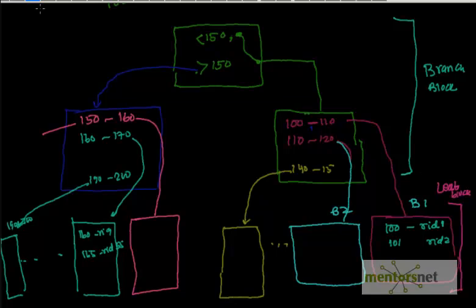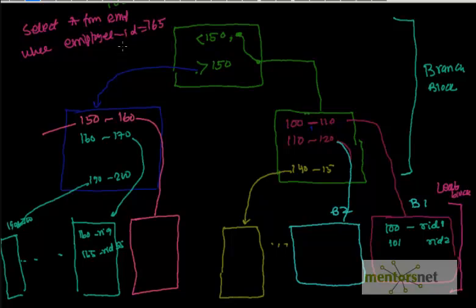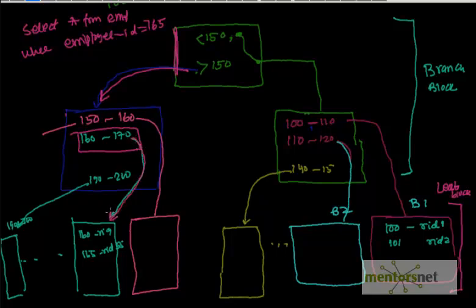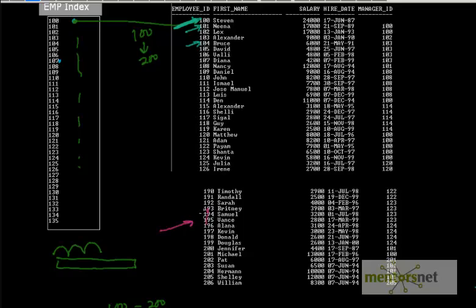The branch block is evaluated and passes control to the next one, while the leaf block gives the row ID. Now let's run a query: SELECT * FROM emp WHERE employee_id = 165. We come to the root block, which tells us to go to the right side. We hit the next branch block, which tells us the range for 165. Then we go to the leaf block. Scanning it, we find 165 and get row ID 55. We then go to row ID 55 and pull that record.